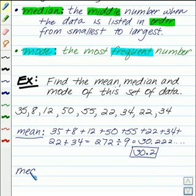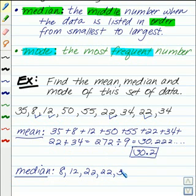Let's next do median. Median, we need to start by listing our data in order, from smallest to largest: 8, 12, check them off as we go, 22, 22, 34, 34, 35, 50, and 55.